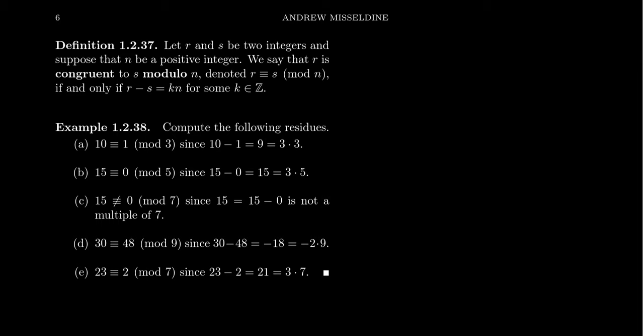So this idea of congruence modulo n is an equivalence relationship, we'll argue that in just a second. Let's look at some examples. We say that 10 is congruent to 1 mod 3, because 10 minus 1 is equal to 9, and 9 is 3 times 3, a multiple of 3. We say that 15 is congruent to 0 mod 5, because 15 minus 0 is itself 15, which is 3 times 5.